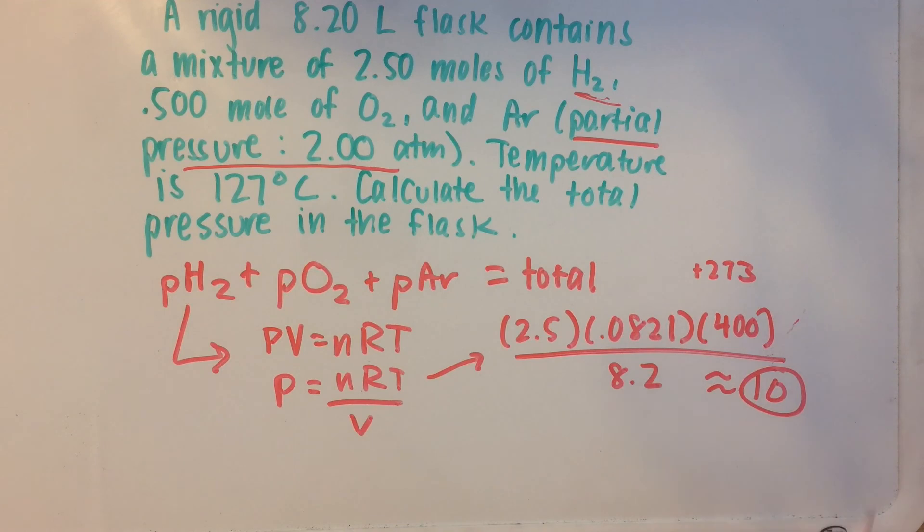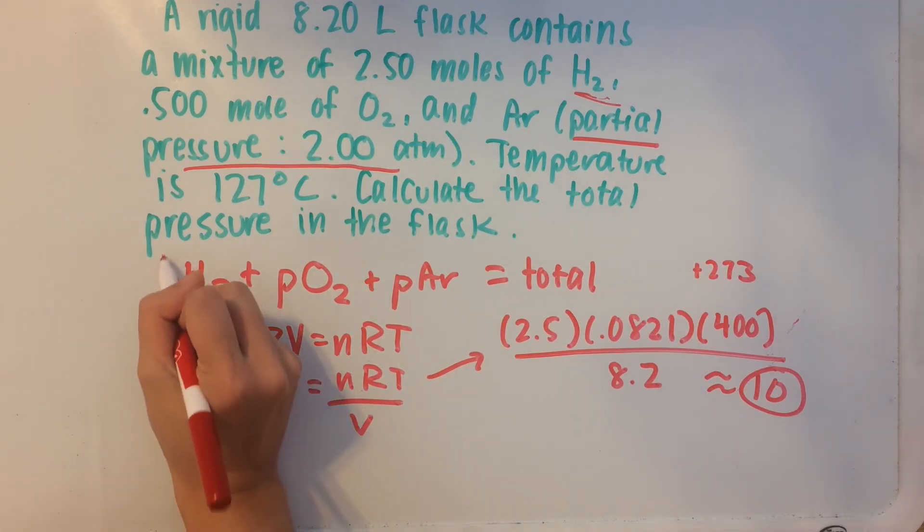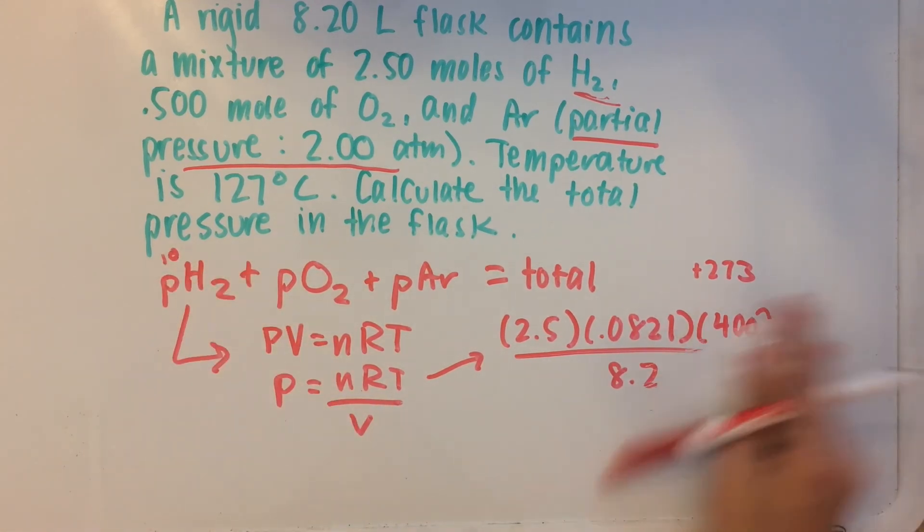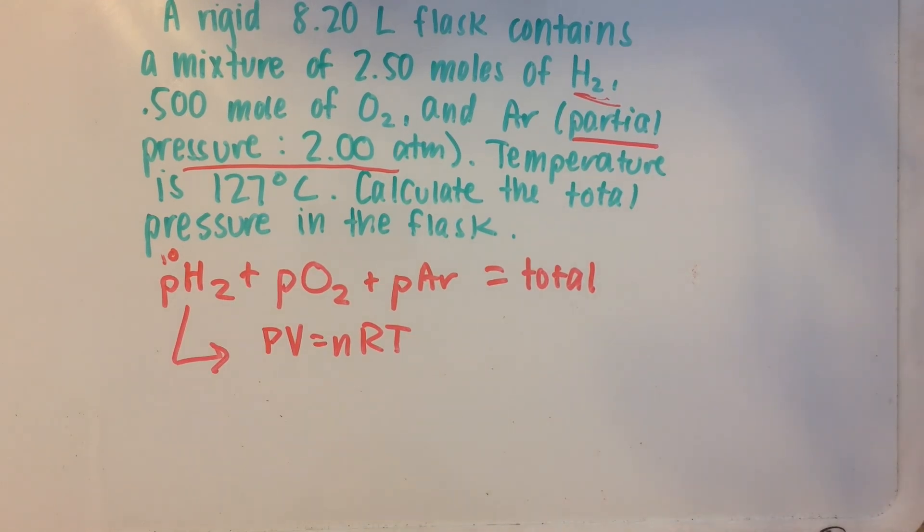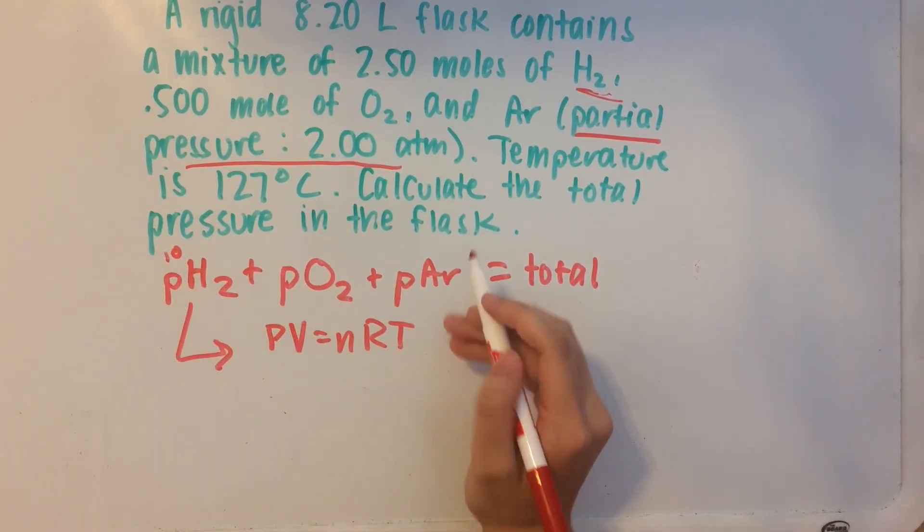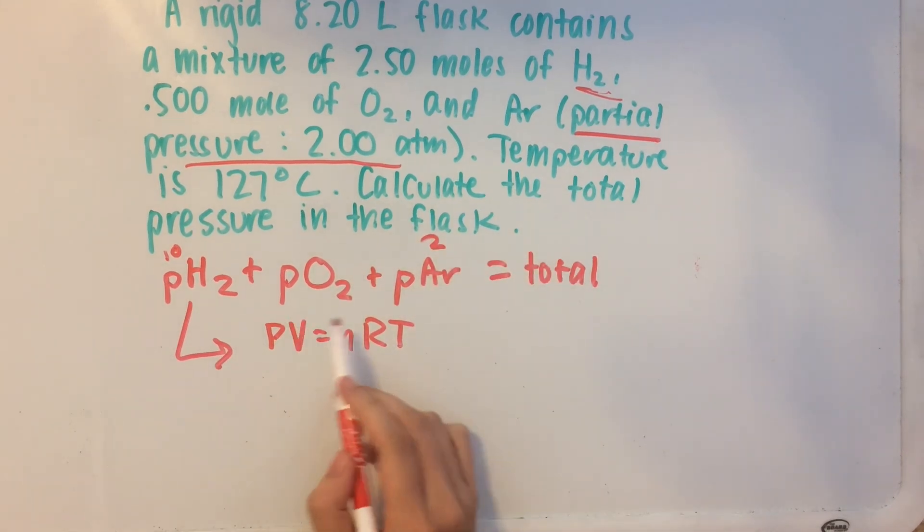Now we can do the same thing for oxygen. Let me keep the ideal gas law there. Okay, so this is 2. Argon is 2 atmospheres. And now oxygen. Let's do the same thing.